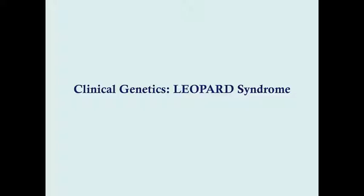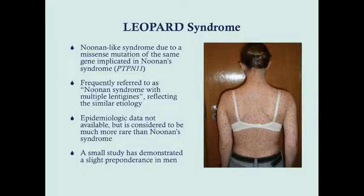Leopard Syndrome shares a lot in common with Noonan Syndrome. It's considered a Noonan-like syndrome, and that's due to the fact that it has a mutation on the same exact gene as Noonan Syndrome does. Why exactly there's Noonan Syndrome in some patients and Leopard Syndrome in others, I don't know, but it probably has something to do with the exact mutation and where it's at.